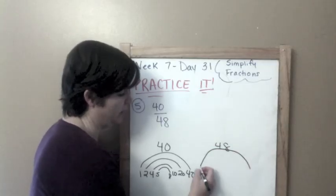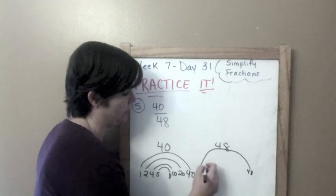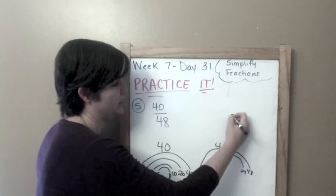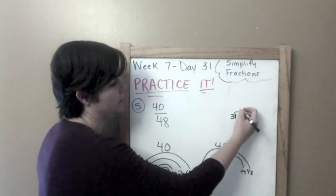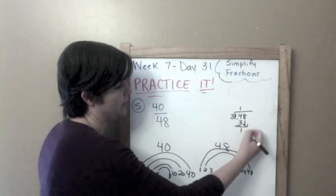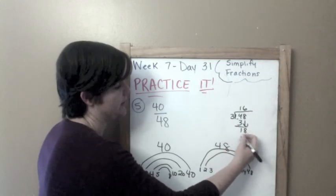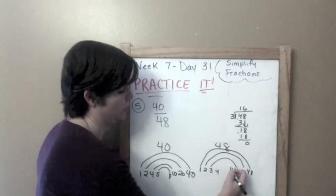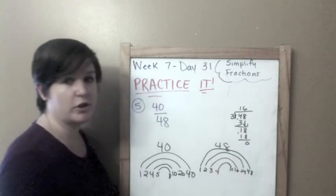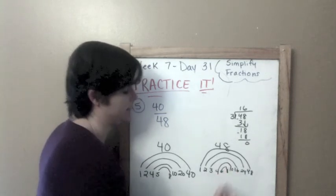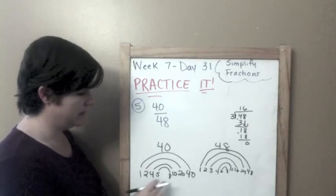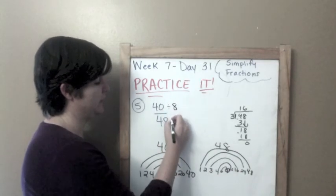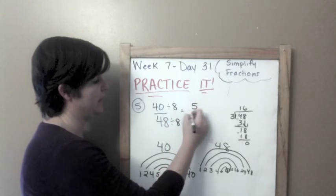What is our greatest common factor? I think it's 8. Let me just make sure. Yep. So, 8. Divide our numerator by 8. Divide our denominator by 8, which will reduce it to 5/6.